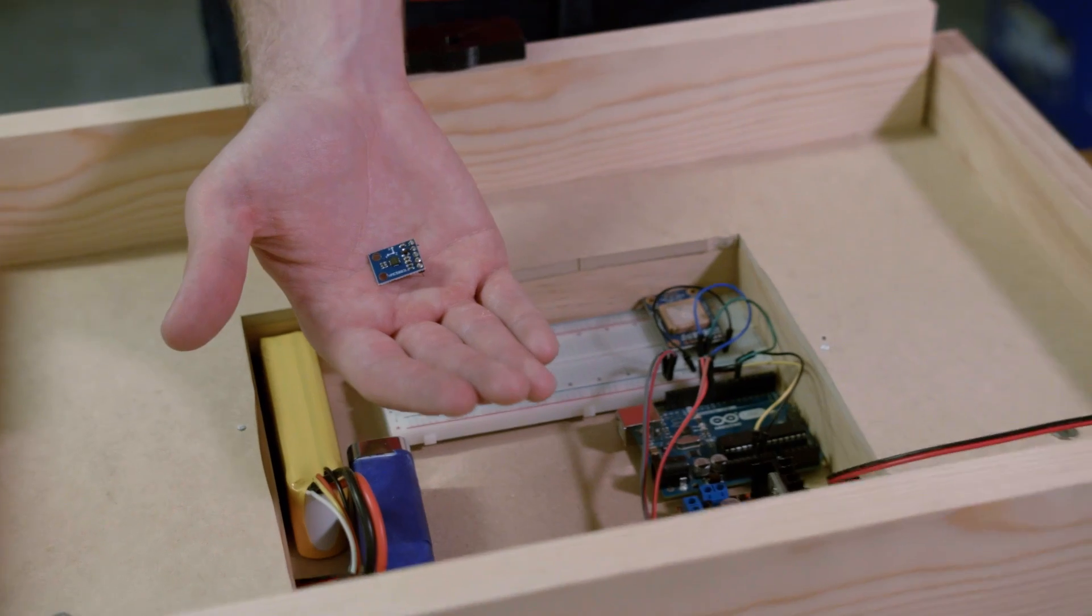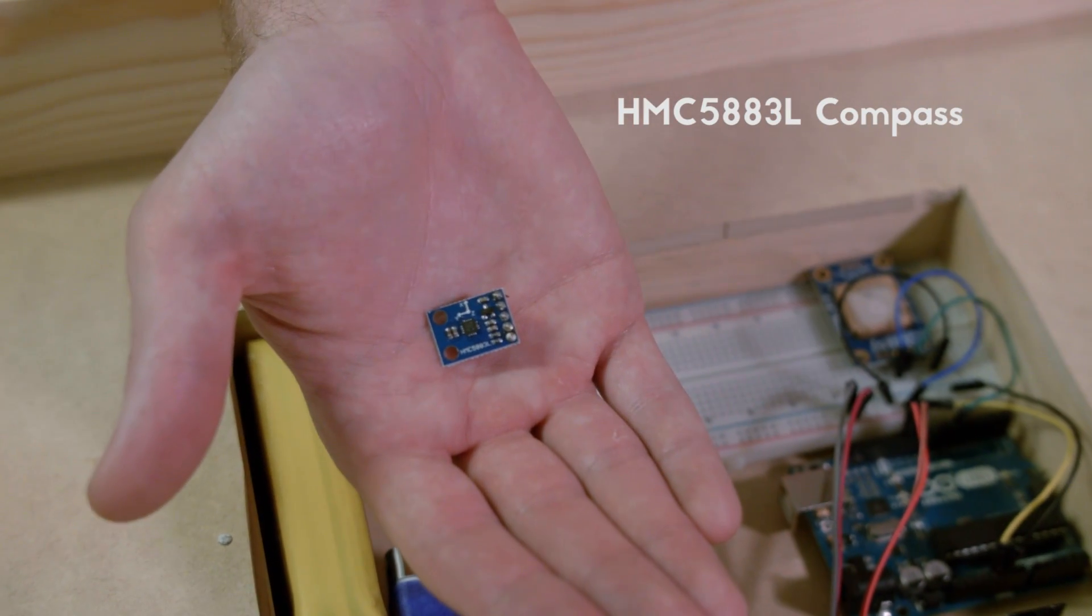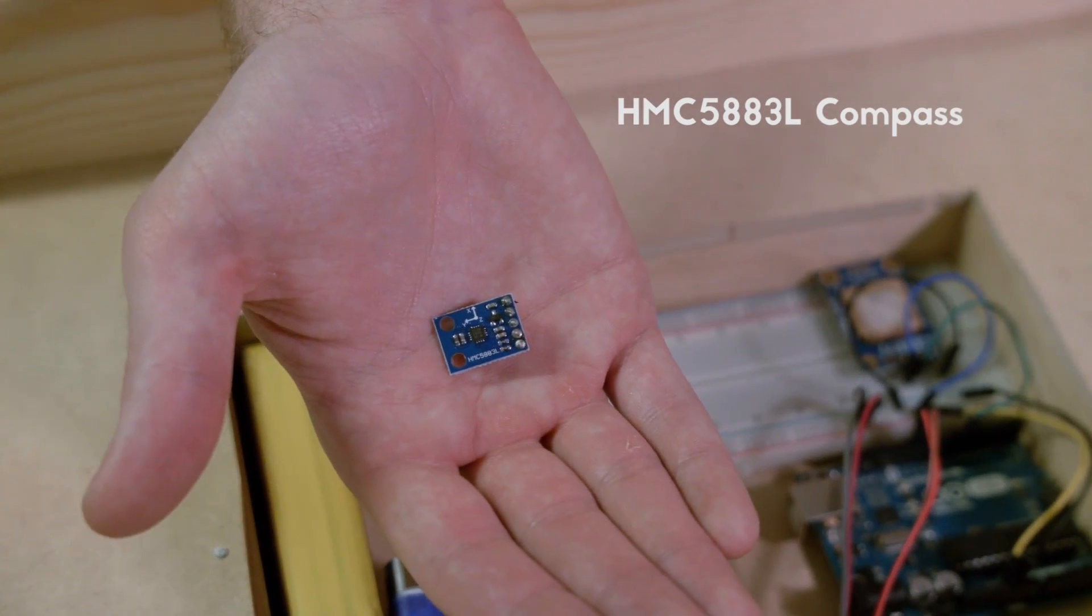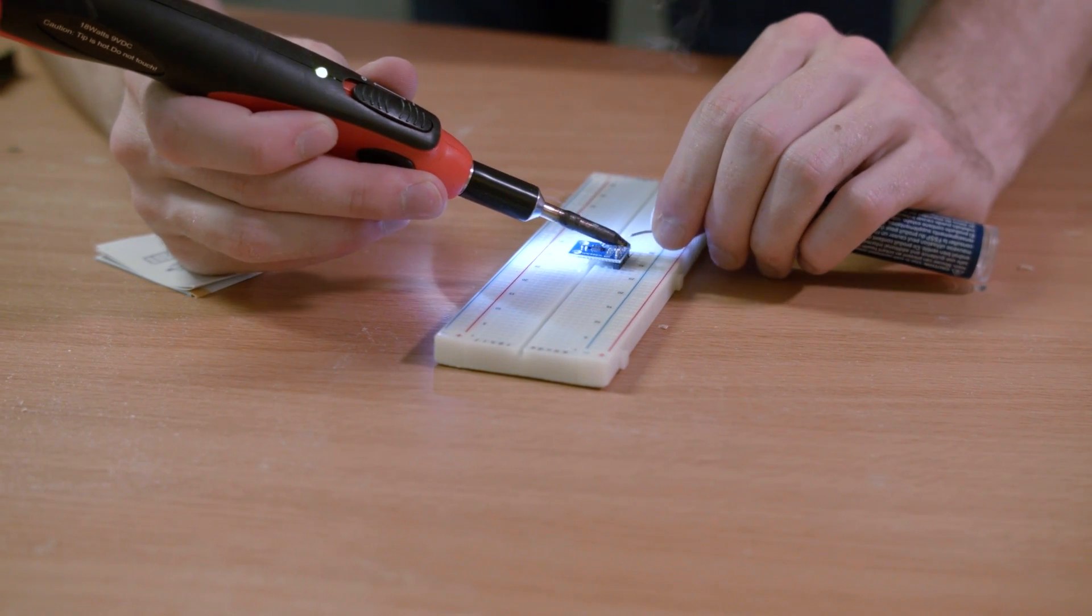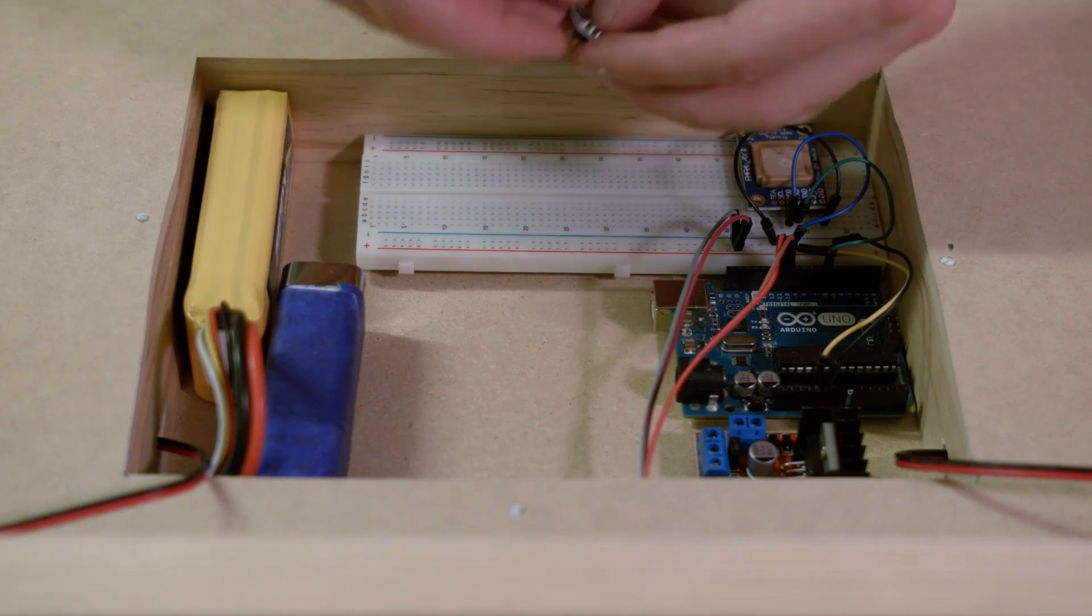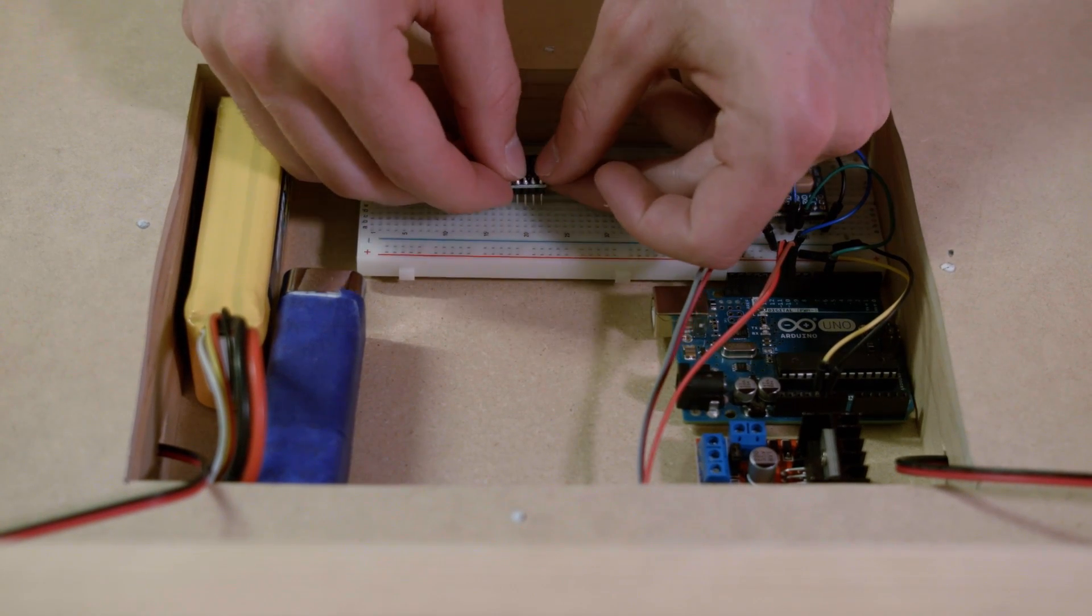The cooler needs to know what direction it's heading so we're using a compass for that. This is the HMC 5883L. The pins come unsoldered so I had to solder on those pins. I just stuck it on the breadboard and used my soldering iron to wire that up.